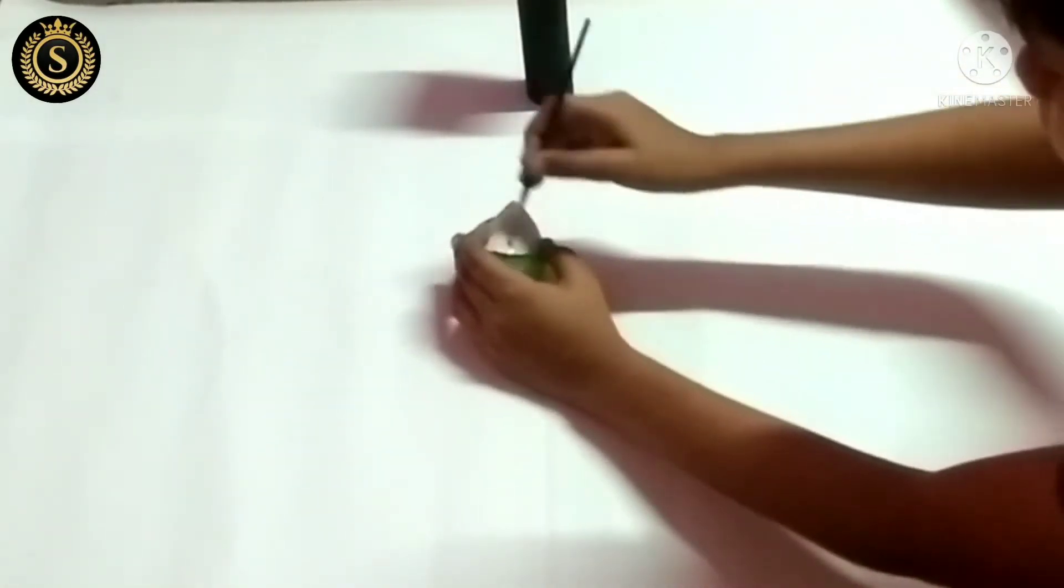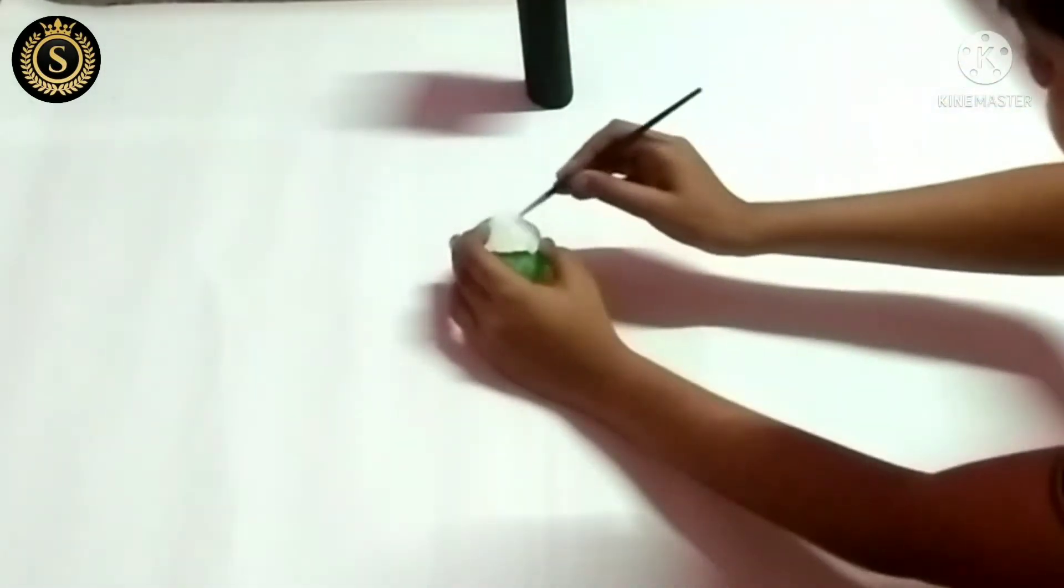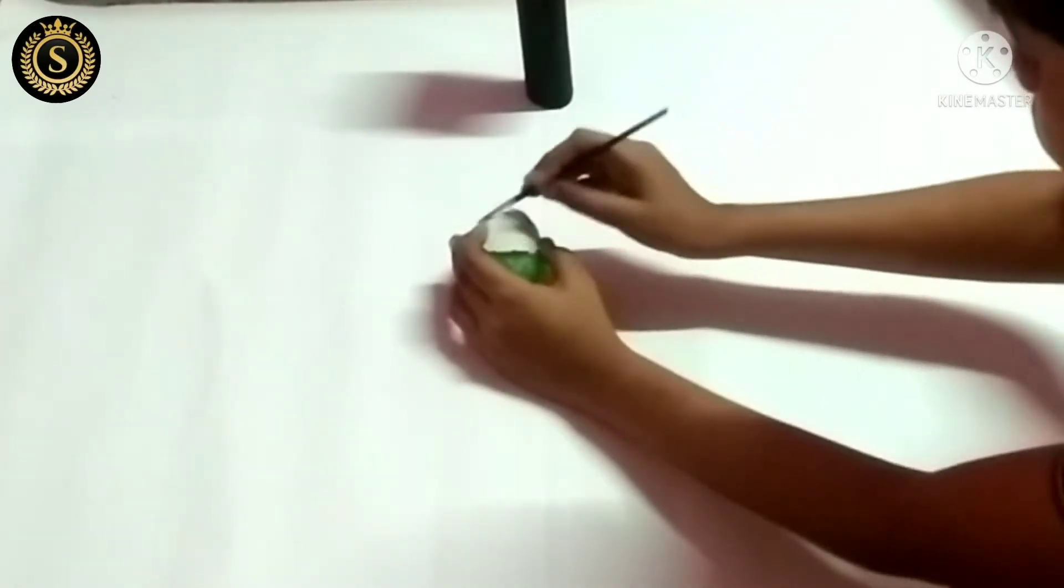Take a plastic ball and stick pieces of paper. Stick the pieces of paper with equal quantity of water and gum.